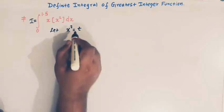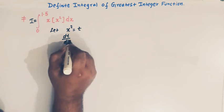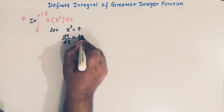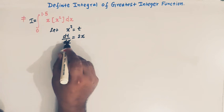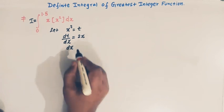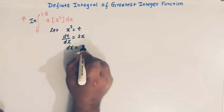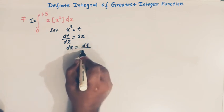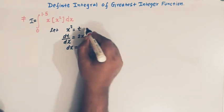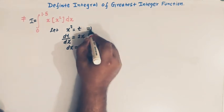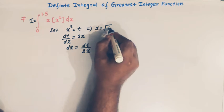Now, dt over dx is equal to 2x. So we can write dx is equal to dt over 2x. And from here, we can write x is equal to square root of t.